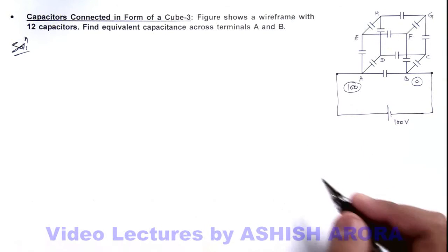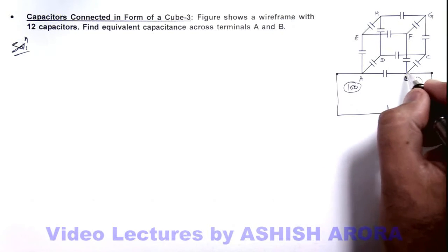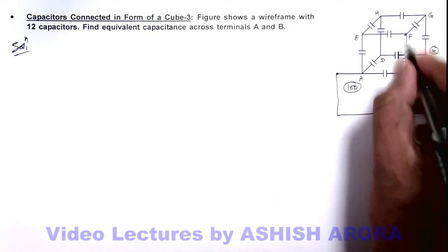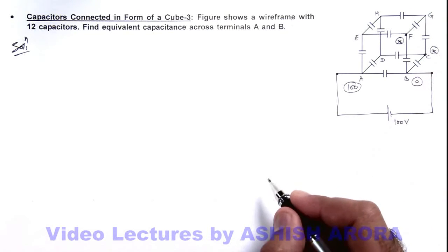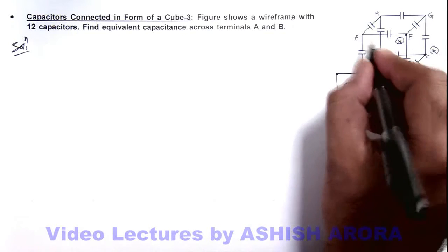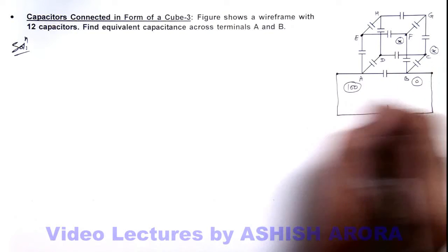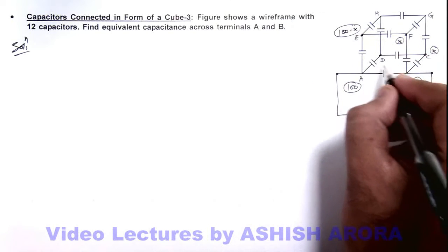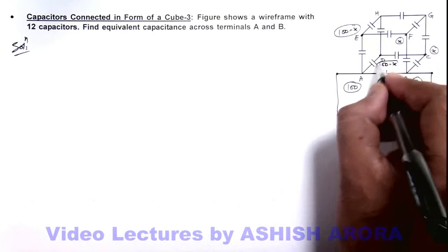If we distribute the potential by symmetry, we can see if here at point C potential is x, at F which is symmetrical with respect to B, potential will remain same as x. Now by input and output symmetry on the two sides, it is 100 minus x at node E and same as 100 minus x at node D.